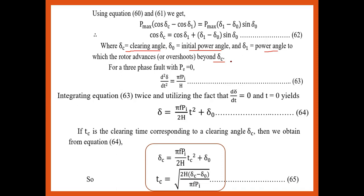For a three-phase fault, Pe equals zero, thus the swing equation becomes: d²δ/dt² equals π·f·Pi / H. Integrating this equation twice, we get the delta value as: delta equals (π·f·Pi / 2H) · t² plus delta-zero. If tc is the critical clearing time corresponding to the critical clearing angle, then from this condition we obtain the critical clearing time: tc equals √(2H·(delta-c minus delta-zero) / (π·f·Pi)).